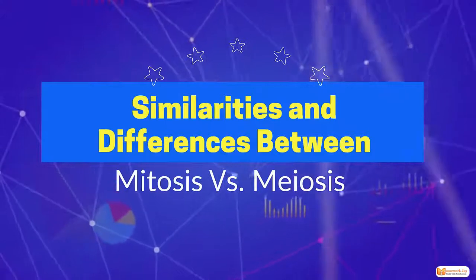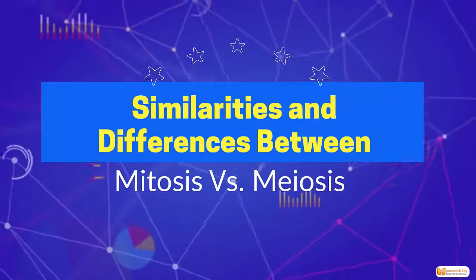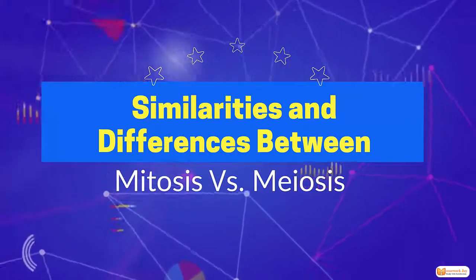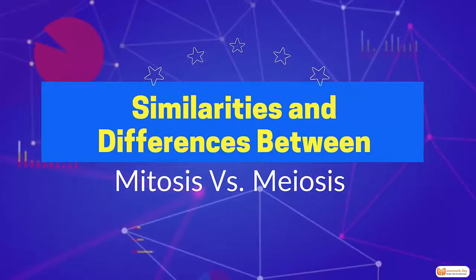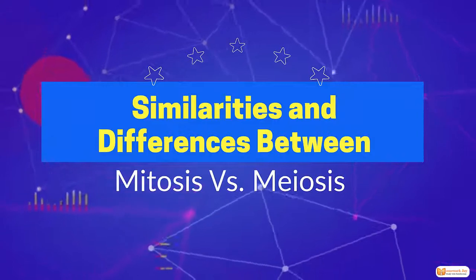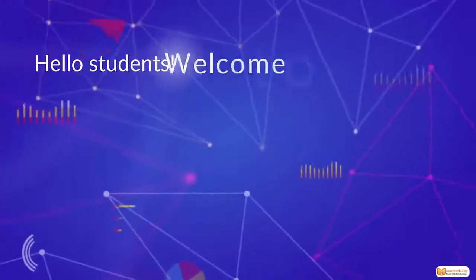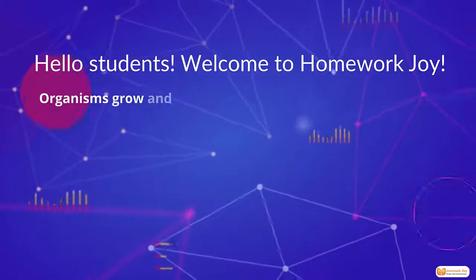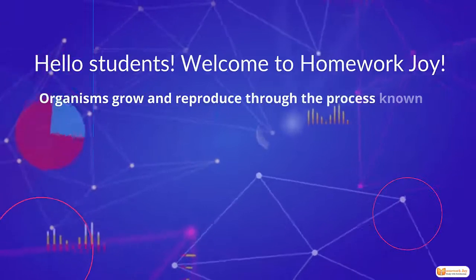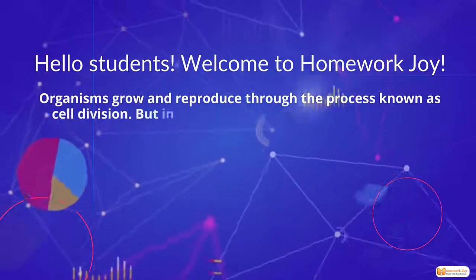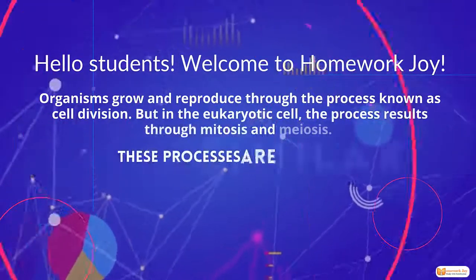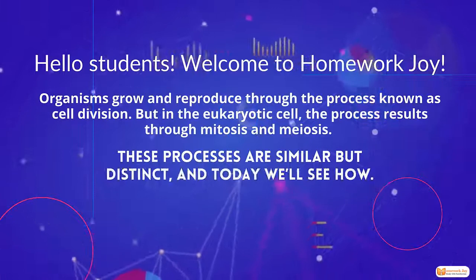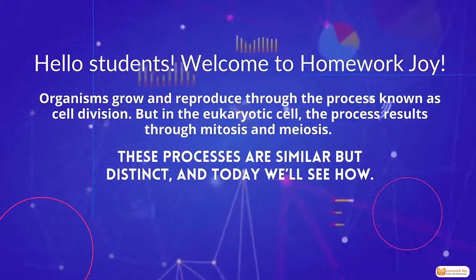Welcome to Homework Joy. Today we're looking at the similarities and differences between mitosis and meiosis. In biotic cells, growth and reproduction occur through mitosis and meiosis, and these processes are distinct. Let's get started.